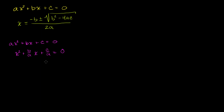Now we want to get the c over a term onto the right hand side. So let's subtract c over a from both sides. And we get x squared plus b over a x, and I'll just leave a blank there because this is gone now — we've subtracted it from both sides — is equal to negative c over a.